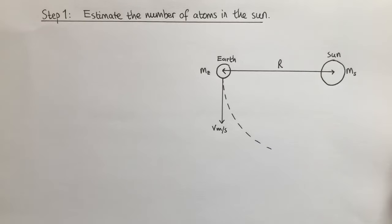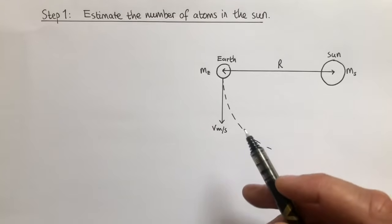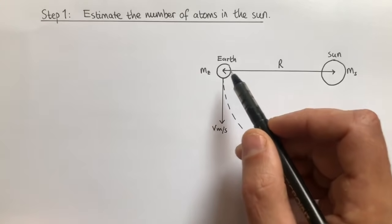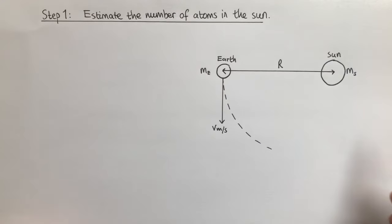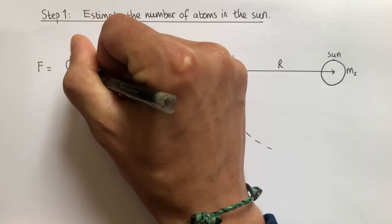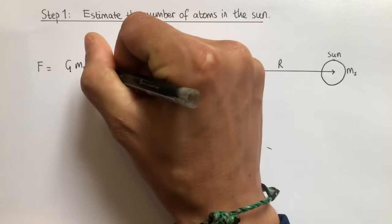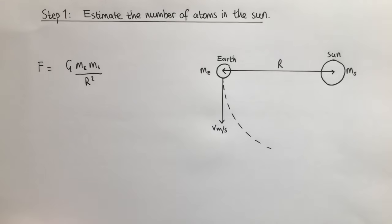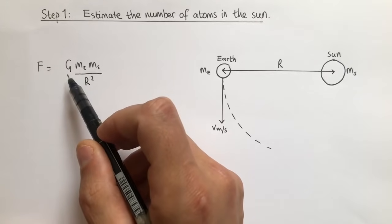We are going to assume that the Earth is moving in a circle around the Sun with a constant speed V metres per second. Newton's Universal Law of Gravitation says that the force acting between the Earth and Sun is proportional to the product of the masses, and inversely proportional to the square of the distance. So we can write F equals G·ME·MS divided by R squared. This is Newton's famous inverse square law relationship, where G is the gravitational constant.